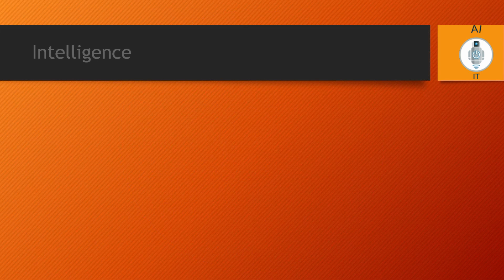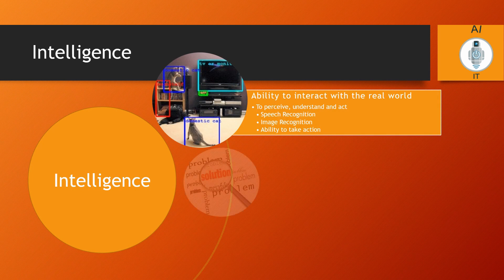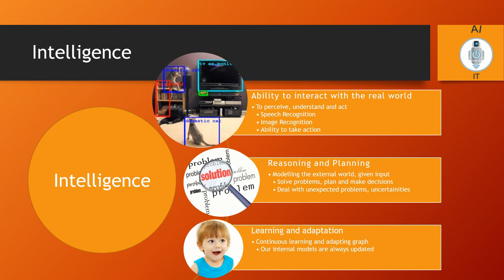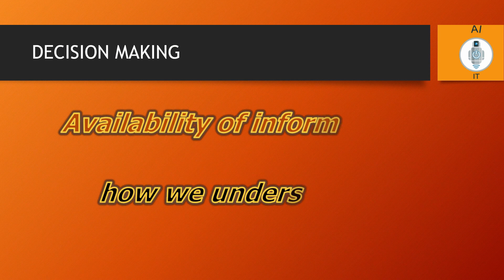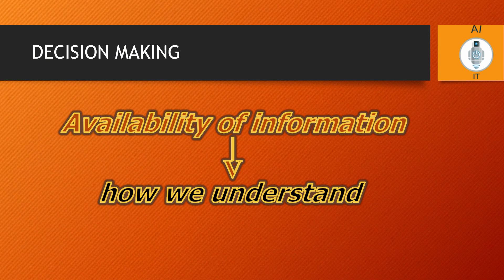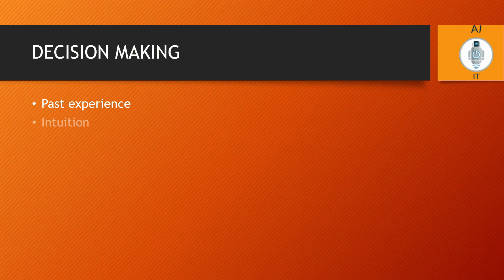Intelligence is the ability to interact with the real world, reason, plan, and adapt. For example, when we read something, we are able to understand its meaning and answer with regard to it. Or when we are talking to someone, we understand what they mean and reply accordingly. Decision-making comprises a crucial part of intelligence. The basis of decision-making depends upon the availability of information and how we experience or understand it. We consider our past experience, intuition, knowledge, and self-awareness for taking decisions.